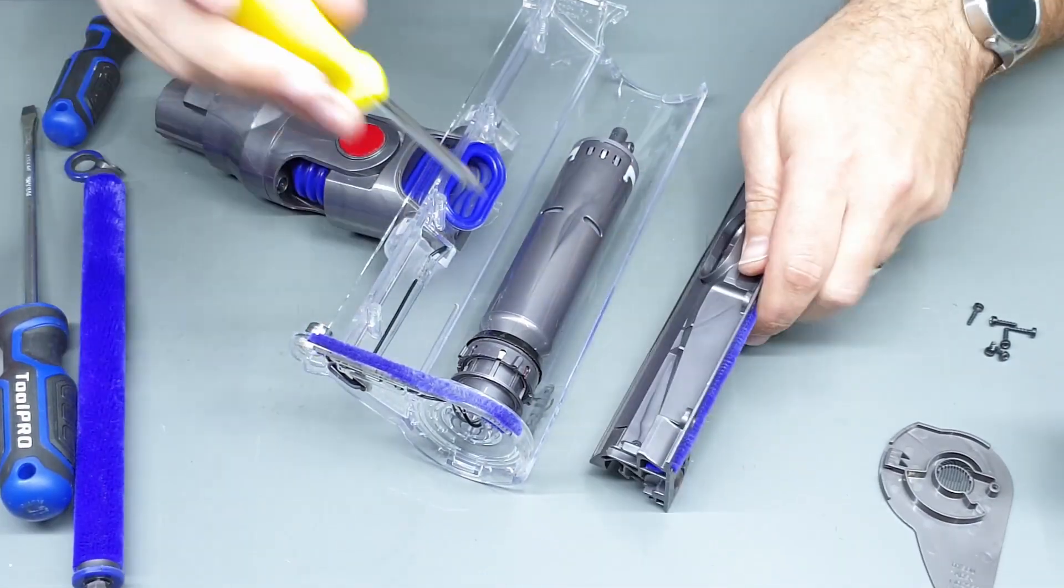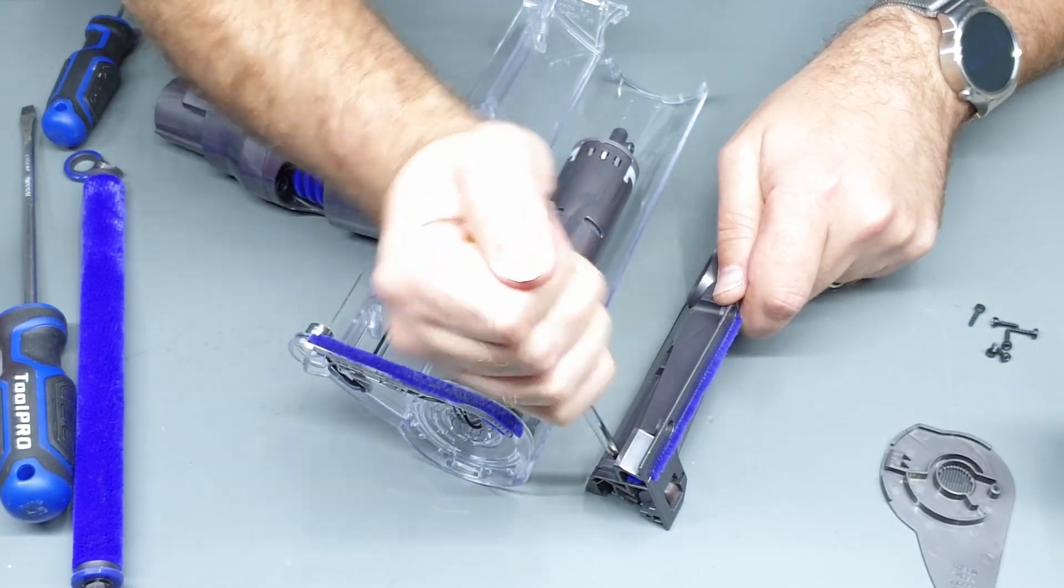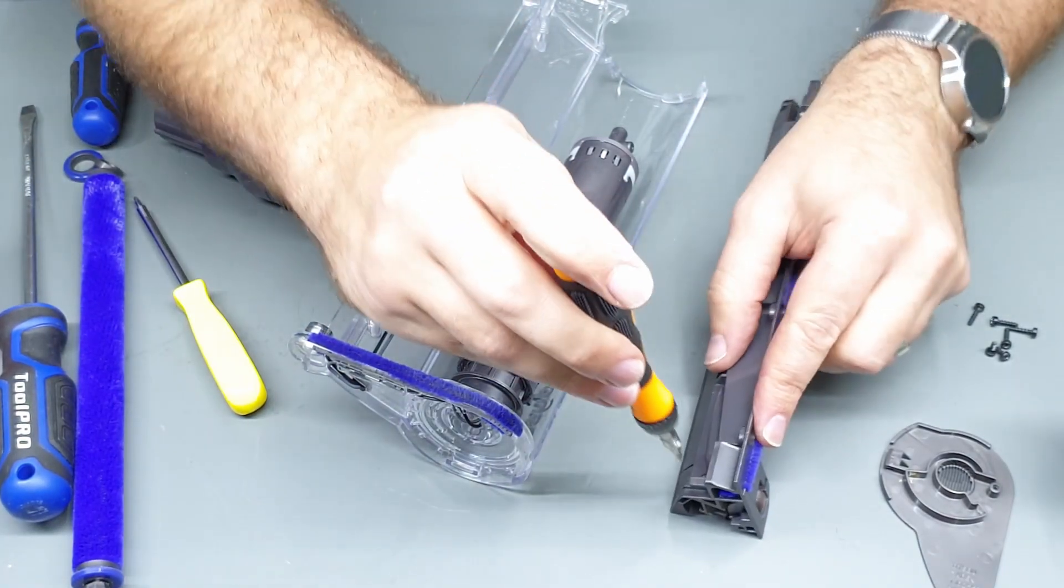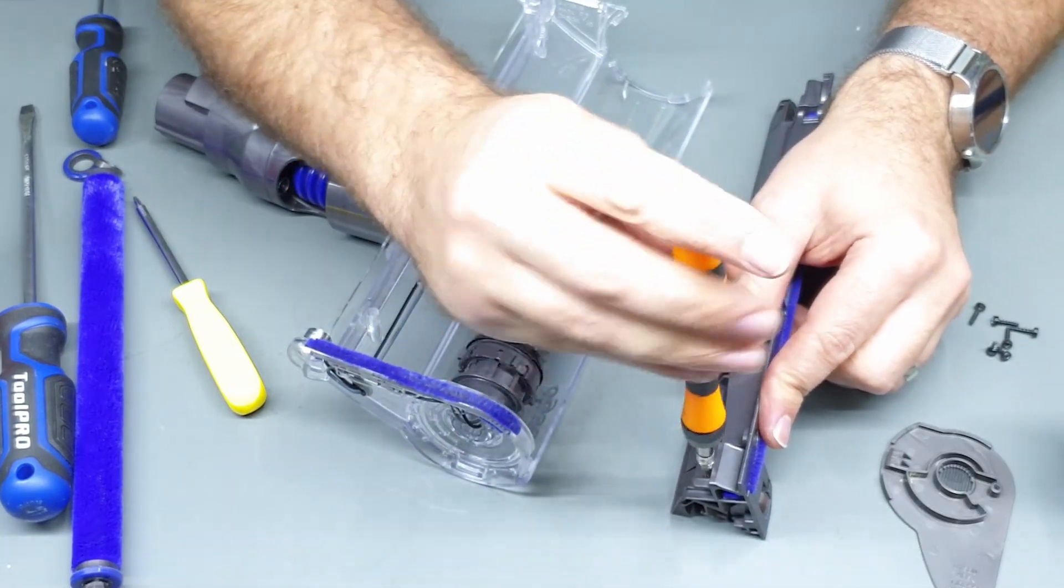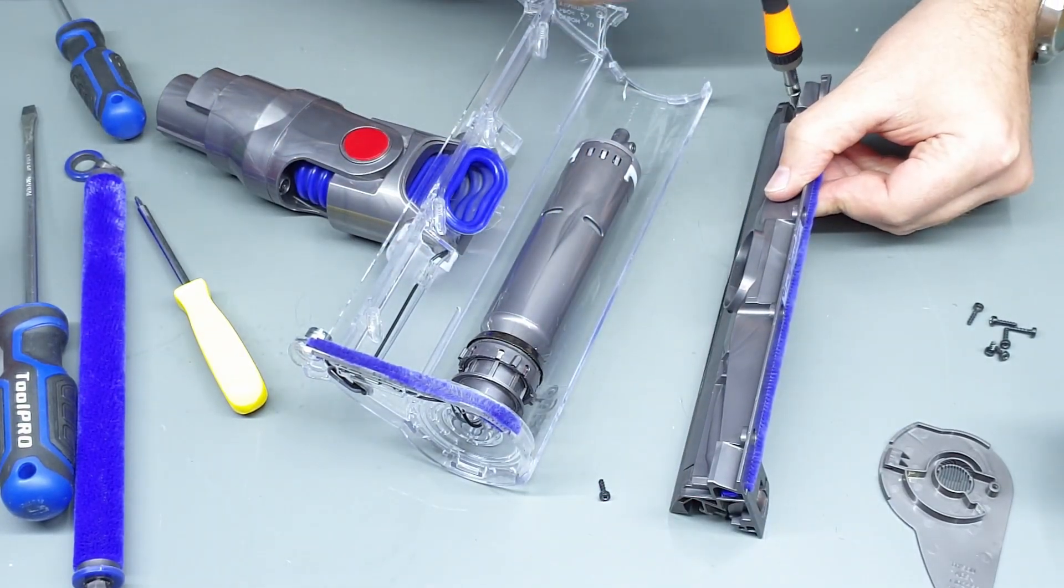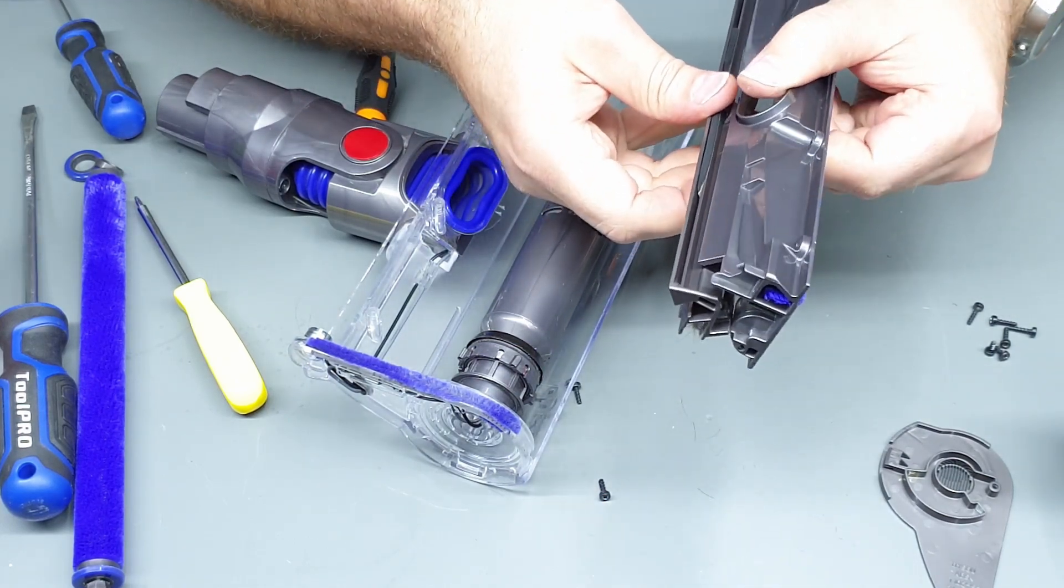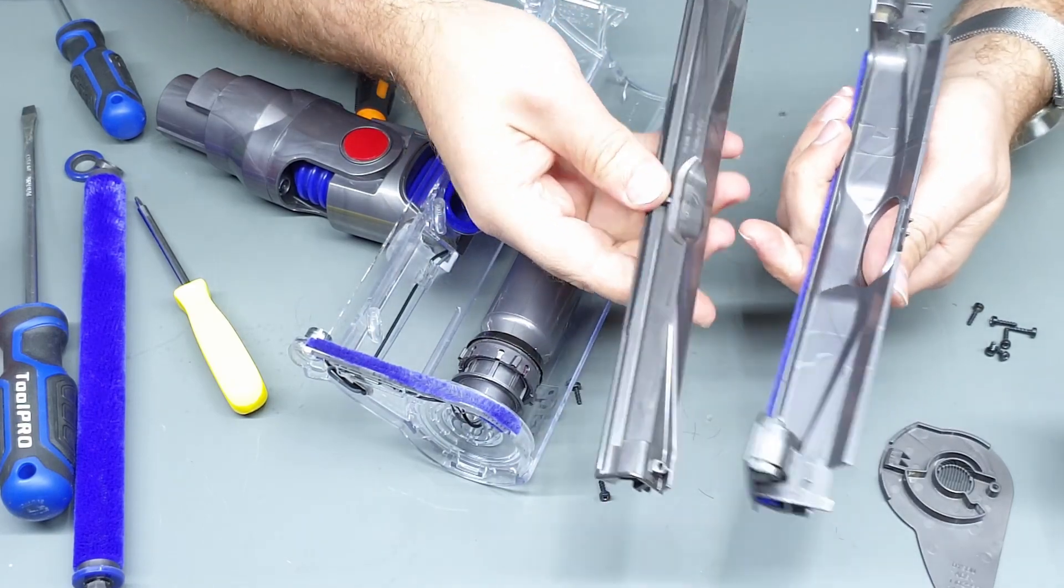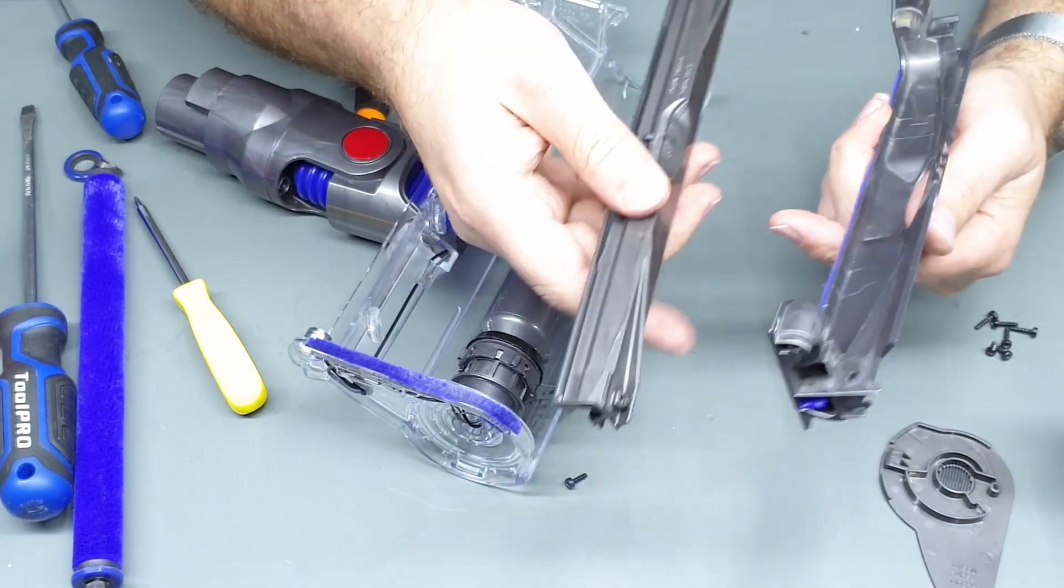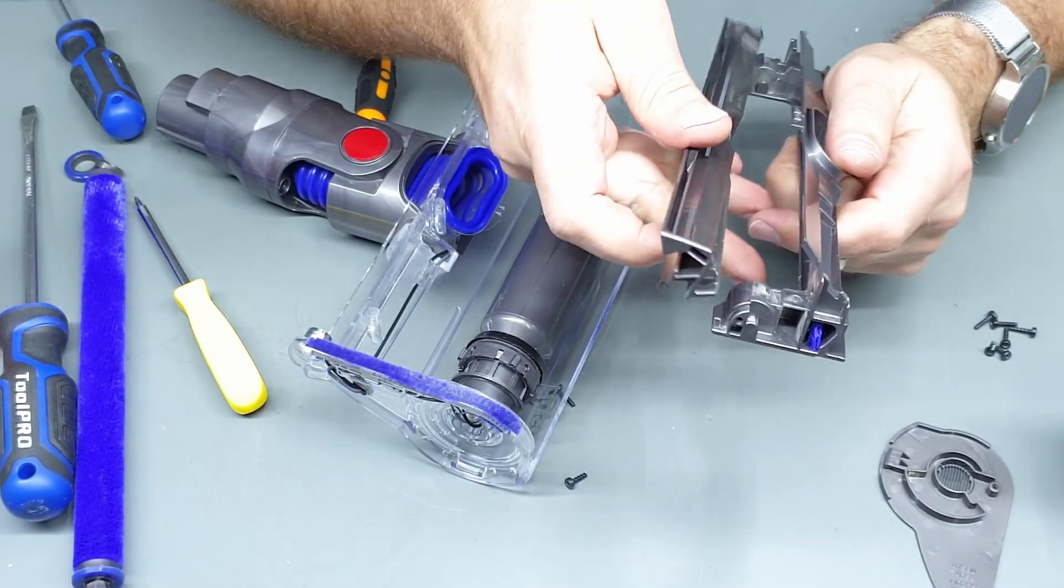You can also go even further, there's two more torx bits here, it's probably not necessary to go this far but I'll show you anyway. I'm just gonna get a better screwdriver because the one I'm using is pretty rubbish. You can separate those two bits and clean out inside. As you can see there's some hair and crap stuck in there so it's always worth cleaning that out. And yeah, with all this stuff always make sure that it's completely dry before you put it back together.